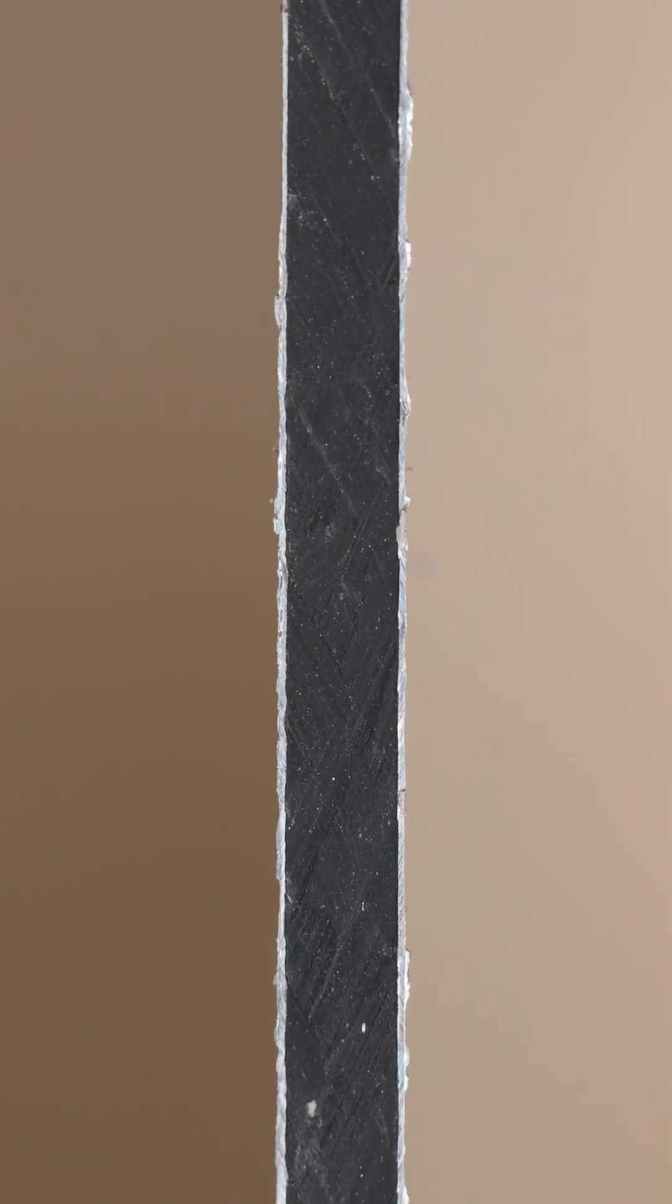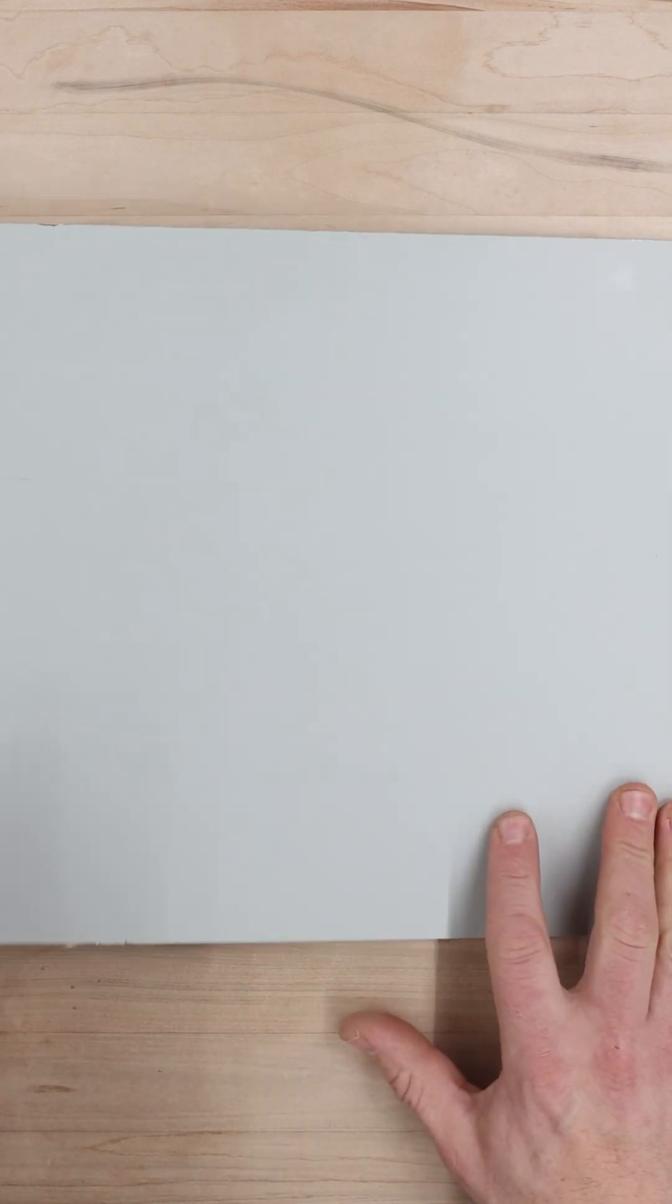This is Dye Bond. It has a polyethylene core sandwiched between two thin sheets of aluminum. One side is white and the other side is metallic.